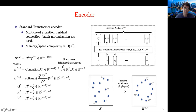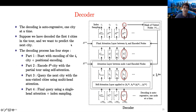The encoder uses self-attention layers to represent the input cities. We start with a 2D representation of the cities, and the encoder produces the best possible representation so that decoding the TSP solution is easy. The decoder is autoregressive—one city at a time. Suppose we have decoded the first T cities in the tour and want to predict the next city; we have four steps to accomplish this.